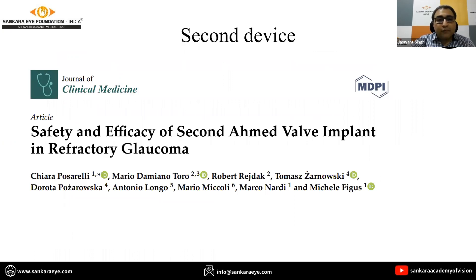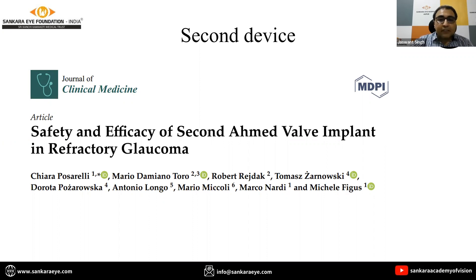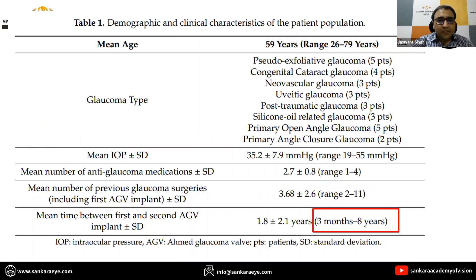Very often a primary device can fail and a second device may need to be implanted. A study assessing the safety and efficacy of a second Ahmed Glaucoma Valve implant in refractory glaucoma found that many diagnoses were the cause of refractory glaucoma in that cohort.